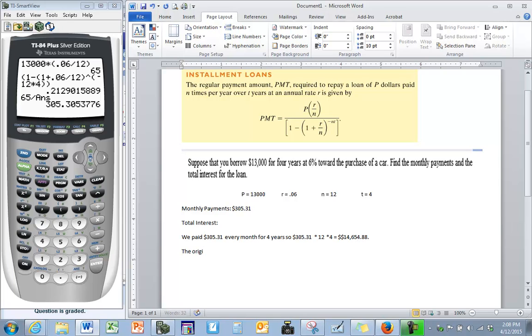Since our original loan was only $13,000, that means the amount of overage represents the interest. How much money we're paying to the loan company or to the bank for allowing us to use that money. So if we subtract the original loan amount, $13,000, from how much we actually paid, this will give us our total interest.